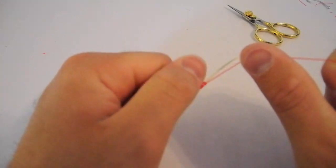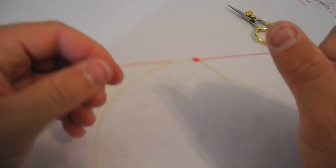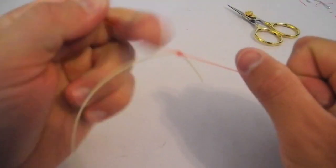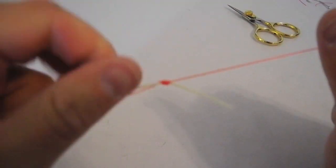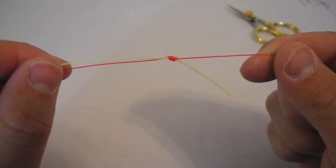And ideally what you want to get is a knot that has all those wraps right up against each other, just like so, nice and clean.